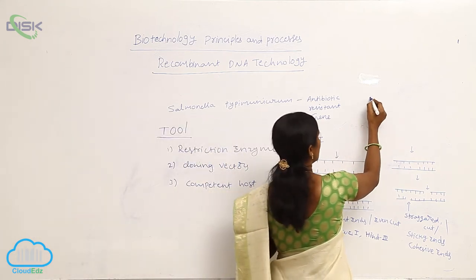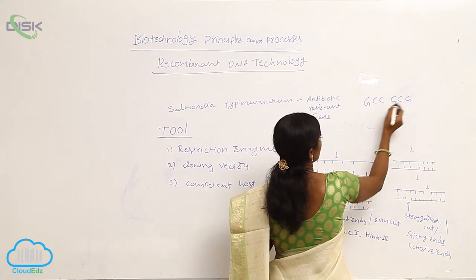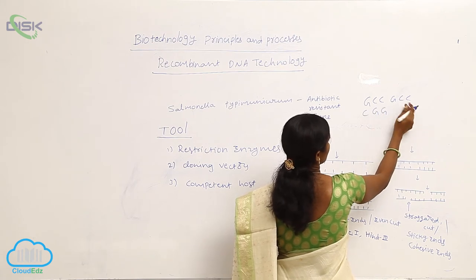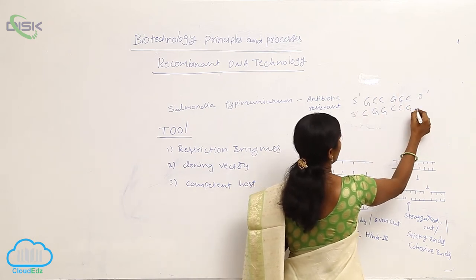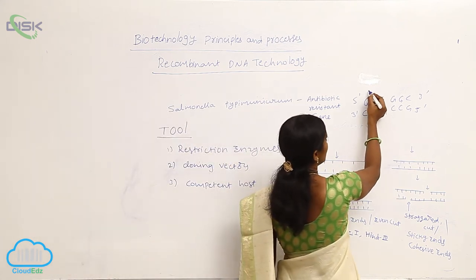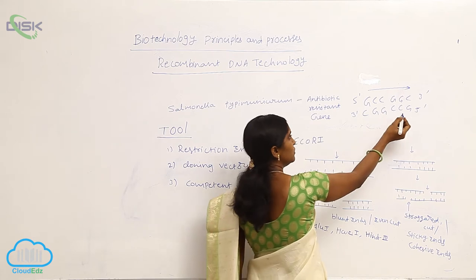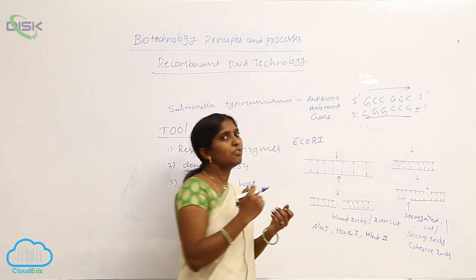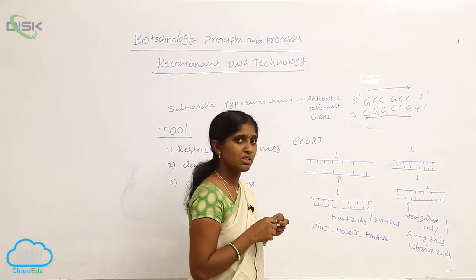For example, consider the sequence GCC-CGG. Reading the upper strand gives GCCGGC, and reading the lower strand also gives GCCGGC. So the reading frames of both strands are the same — these are called palindromic sequences. When palindromic sequences are present, certain restriction enzymes make a cut.